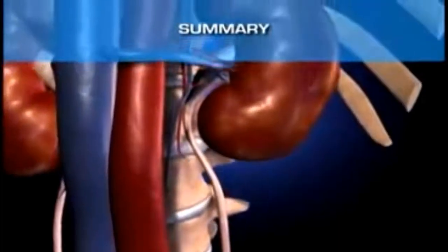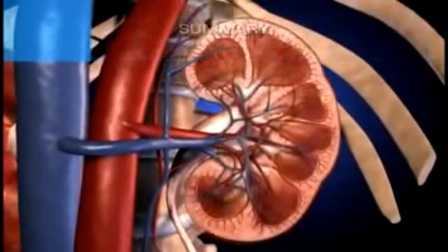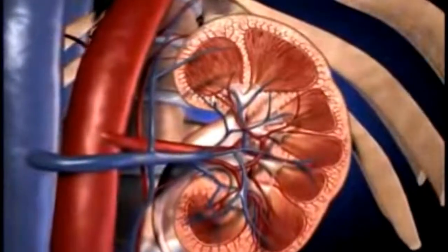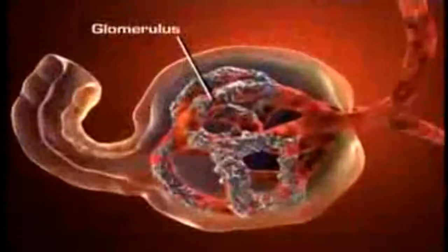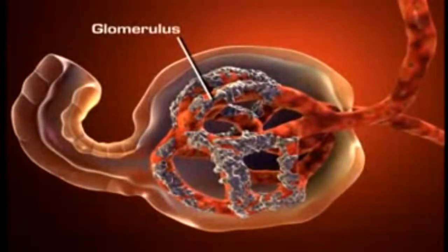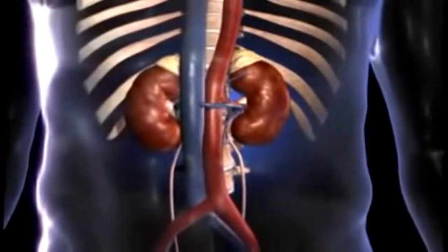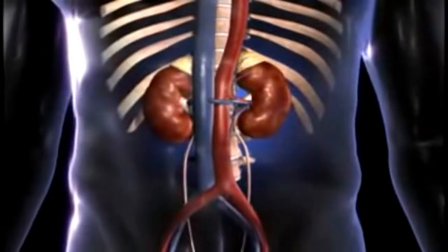The kidneys perform an excretory function by filtering the blood and then selectively reabsorbing those materials that are needed to maintain a stable internal environment. The nephron is the functional unit of the kidney and is composed of a glomerulus, which filters the blood, and a tubular component, where necessary substances are reabsorbed into the bloodstream, and unneeded materials are secreted into the tubular filtrate for elimination in urine.